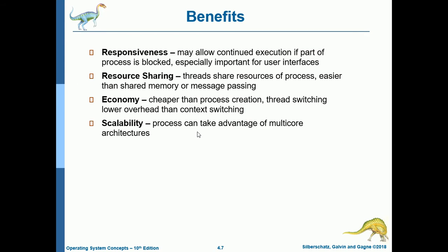The benefits of using threads are: first, responsiveness — it may allow continued execution if part of the process is blocked, which is especially important for user interfaces. Second, resource sharing — threads share resources of the process, such as code, data, and files, which is easier than shared memory or message passing. Third, economy — thread creation is cheaper than process creation and thread switching has lower overhead than context switching. Fourth, scalability — a process can take advantage of multi-core architectures.